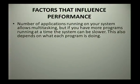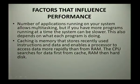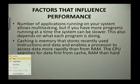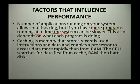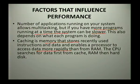If a number of applications are running on your system it allows multi-tasking, but having more programs running at a time can cause your system to be slower, depending on what each program is doing. Caching is memory that stores recently used instructions and data, enabling a processor to access data more rapidly than from the RAM. The CPU searches for data first from cache, then RAM, and then from the hard disk.